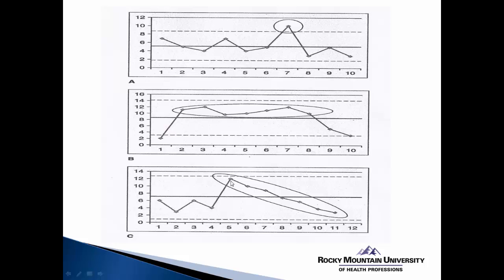The third graph is an example of the third rule, where we have a group of data traveling in a direction that eventually crosses the mean line of the baseline data. We can see at data point number five a steady decline toward data point number 11 that crosses that center mean line. These are three graphical examples of rules in which variation would be considered special cause — something is creating a systematic difference in these runs, trends, or single data point placements that goes beyond what we would consider random variation.